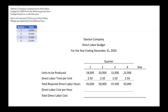For direct labor cost per hour, we're told that wages are expected to be $20 per hour, and that isn't supposed to change throughout the year, so it remains constant through each of our four quarters.